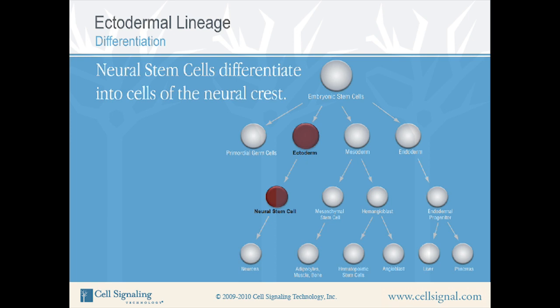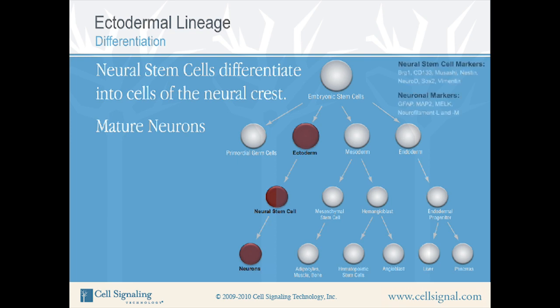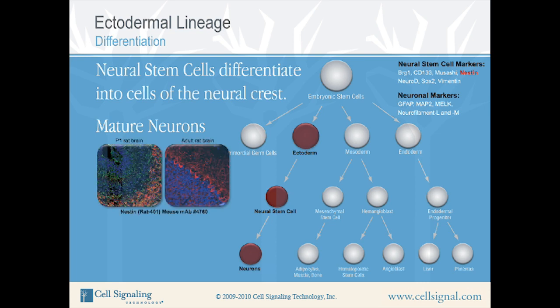Neural stem cells further differentiate into mature neurons as well as supporting glial cells. This process is called neurogenesis. A number of markers used to identify neural stem cells and mature neurons are shown on the right. IF analysis shows expression of the neural stem cell marker nestin in P1 (postnatal day 1) rat brain, as compared to mature adult rat brain.